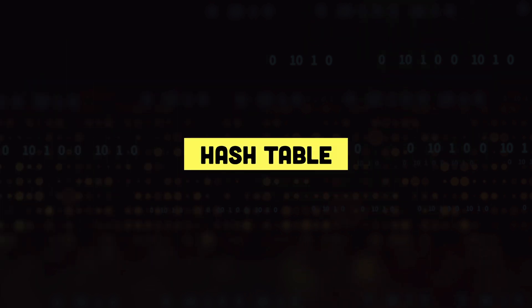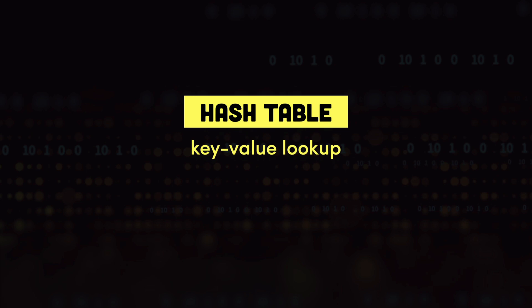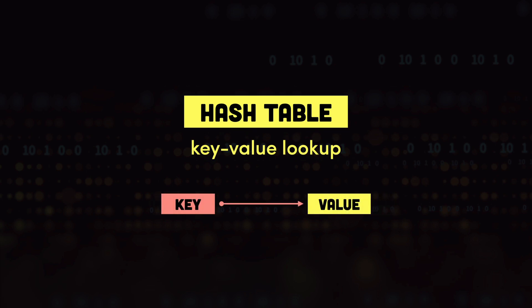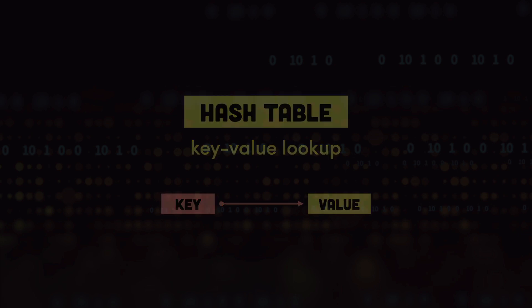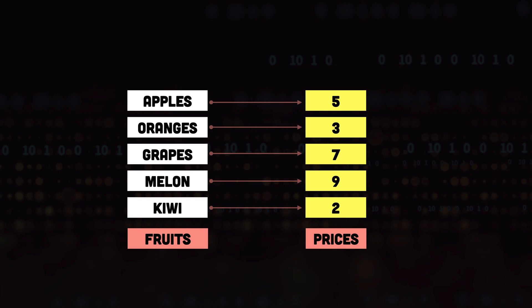But what is a hash table and why will it be faster? A hash table is simply a data structure which is mainly used for key-value lookup, which means that we have keys and for each key we have the value that we want to store. If we use the hash table for our price list, we will have the fruit names as the keys and the prices as the values. Whenever we need the price of some fruit, we simply look for the relevant fruit name key and get the price — allowing us to get prices much faster without any iterations.